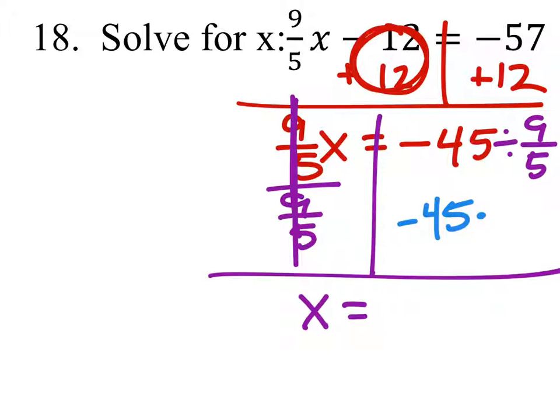Negative 45 times 5/9. And negative 45 times 5 would be 250... 225, let me double check.